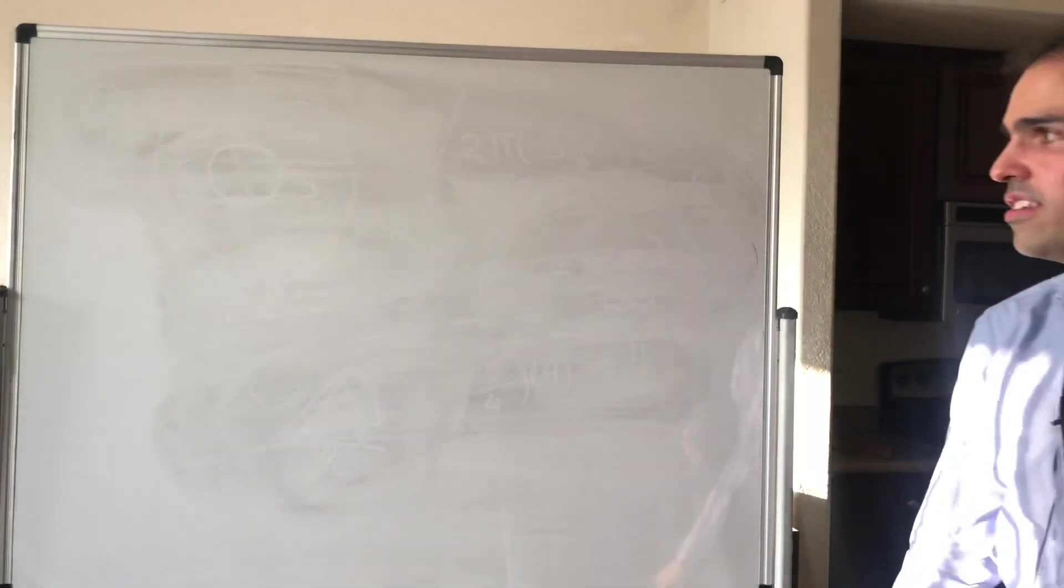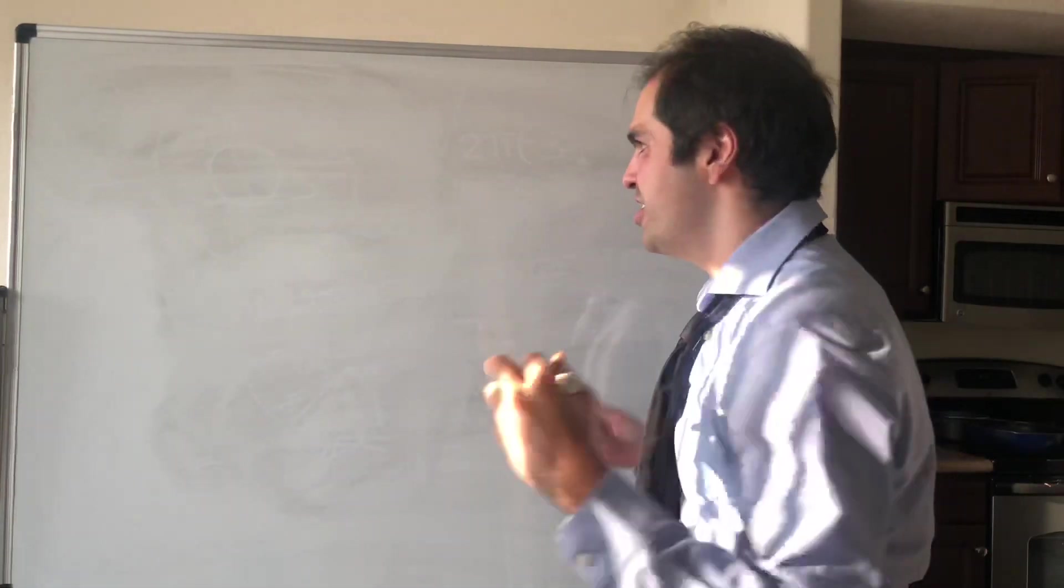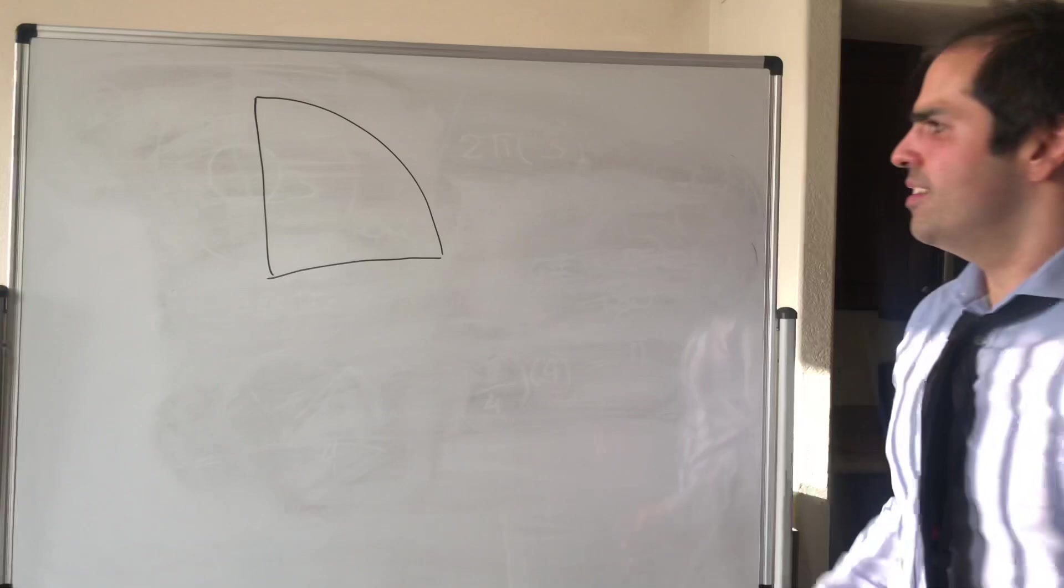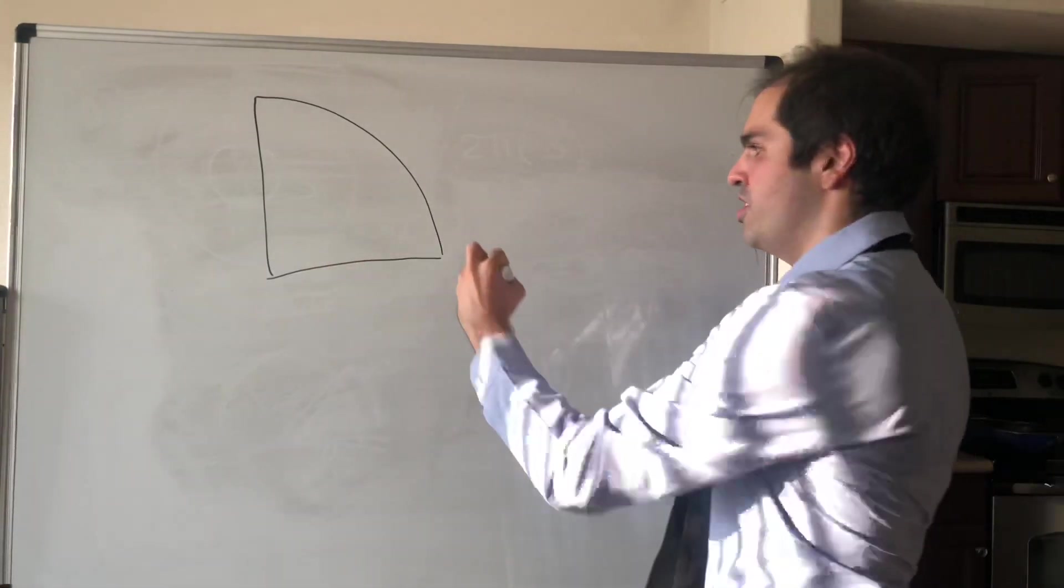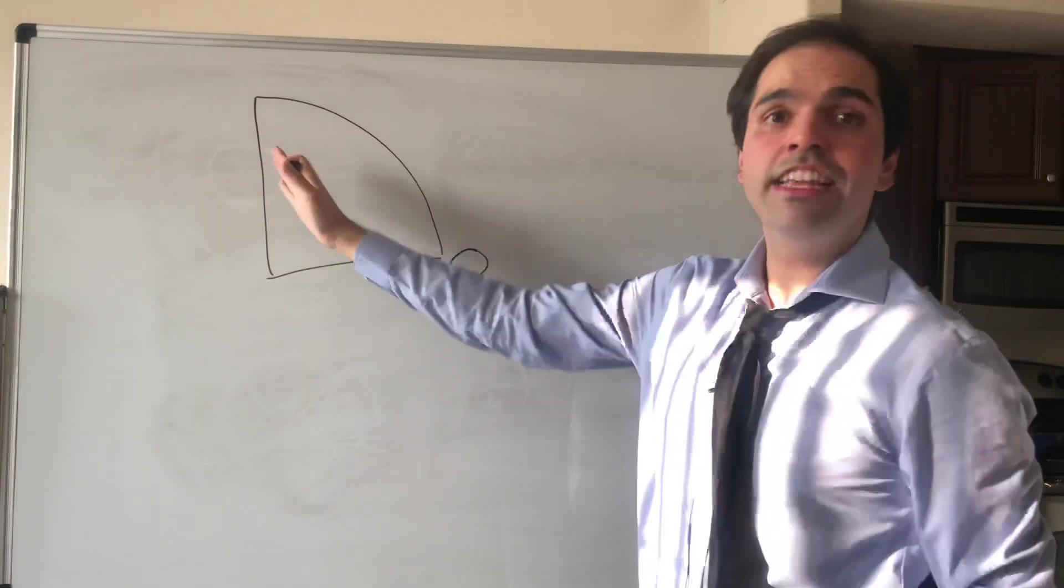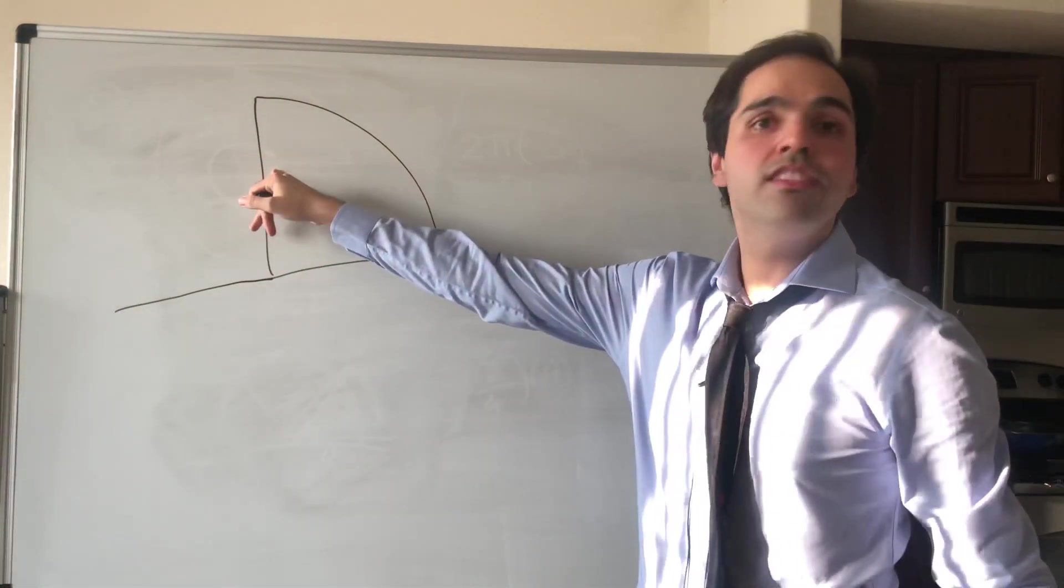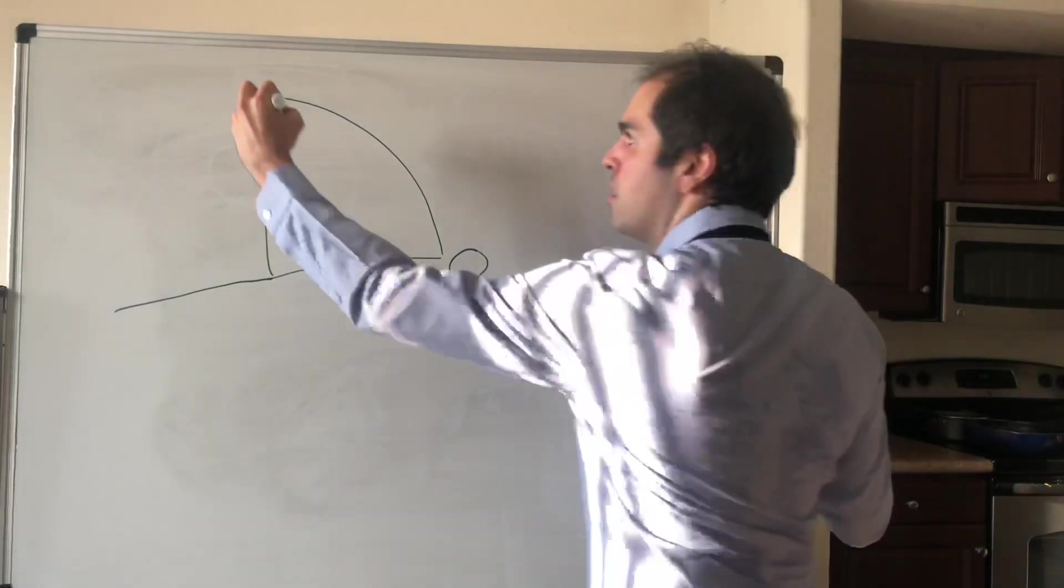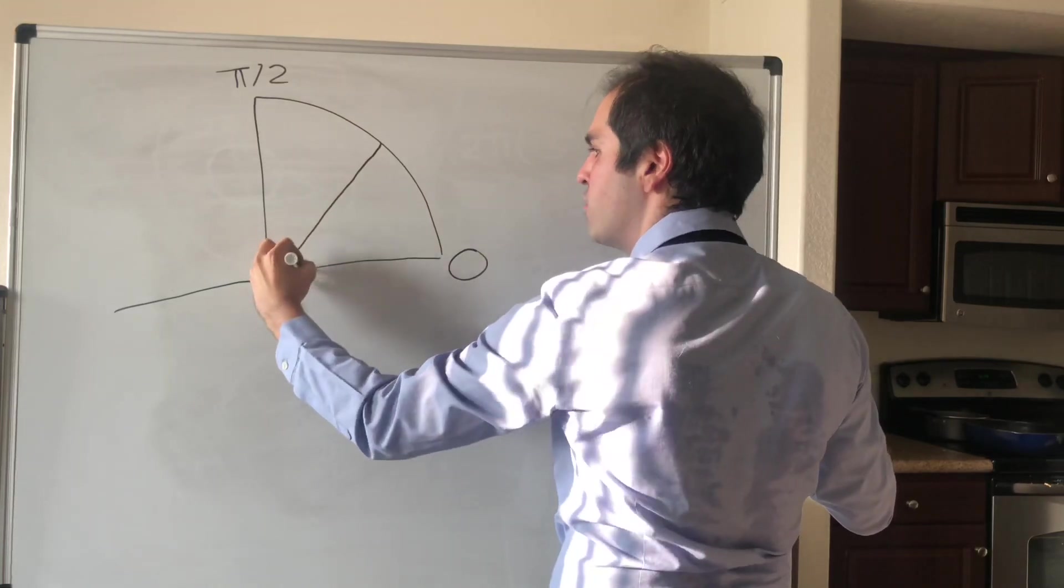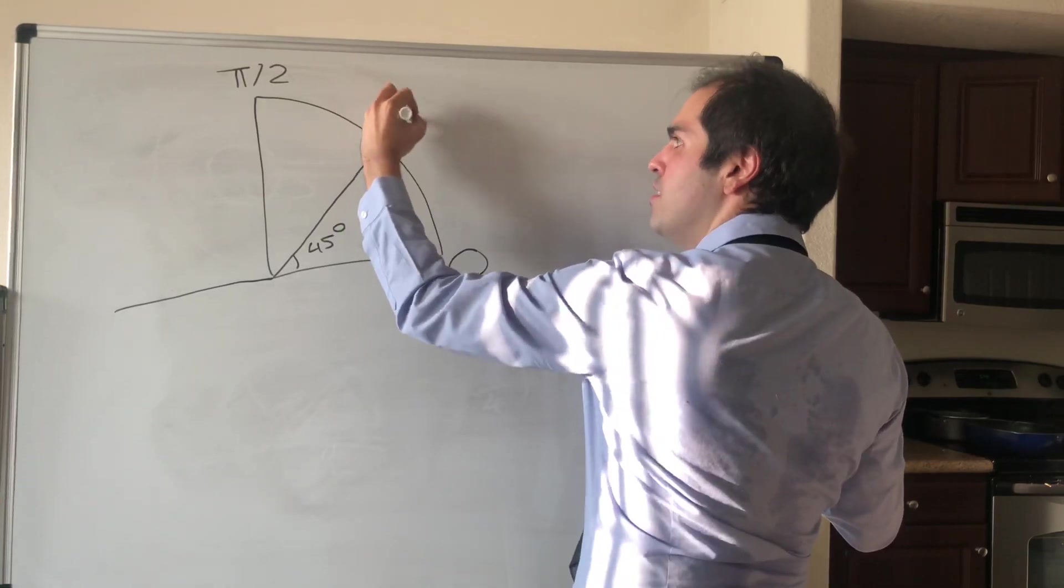And before I do a couple more exercises, let me just talk about some very important radian measures because we'll do trig very soon. So first of all, there's 0 degrees, which is the same as 0 radians. And then there's 90 degrees. Well, remember the half circle is π, so 90 degrees is π/2. And then what happens if you do 45 degrees? Well, that's the half of that, so π/4.